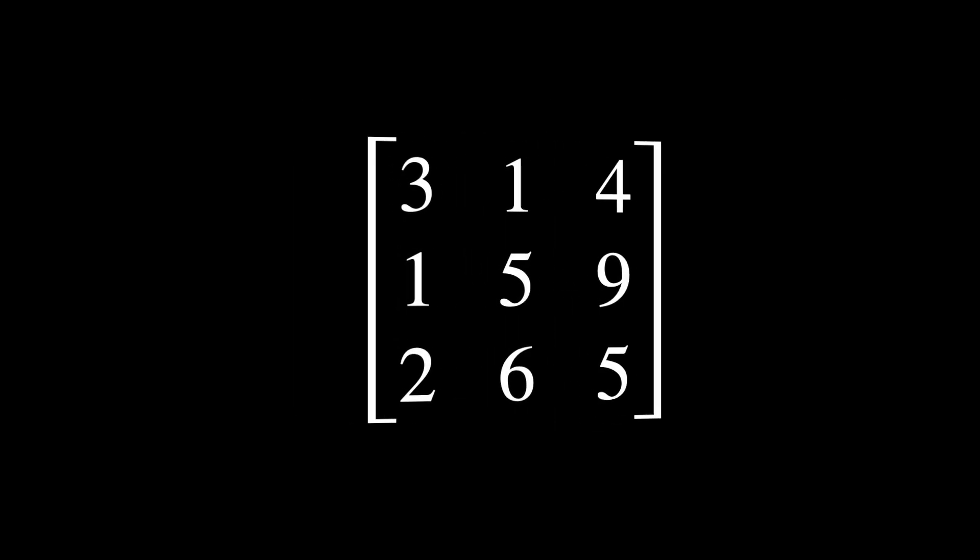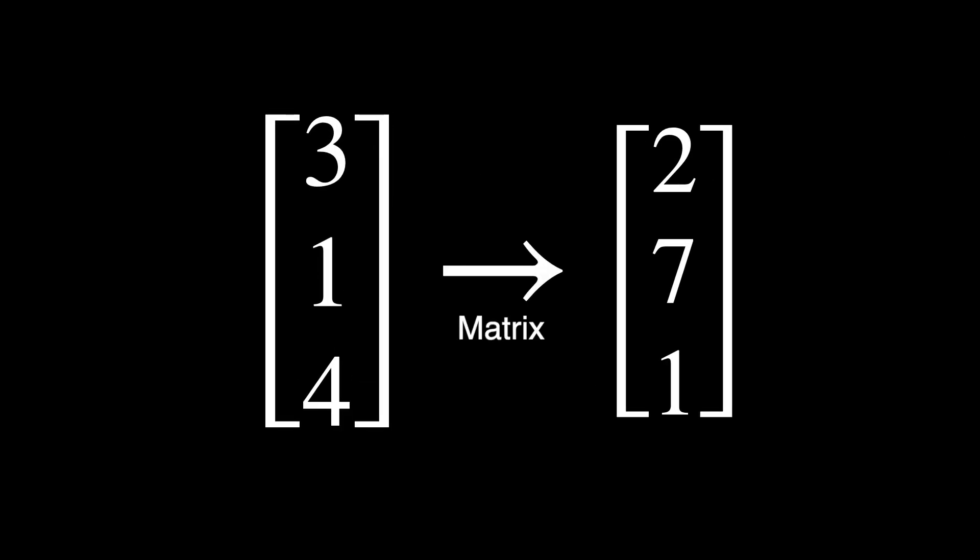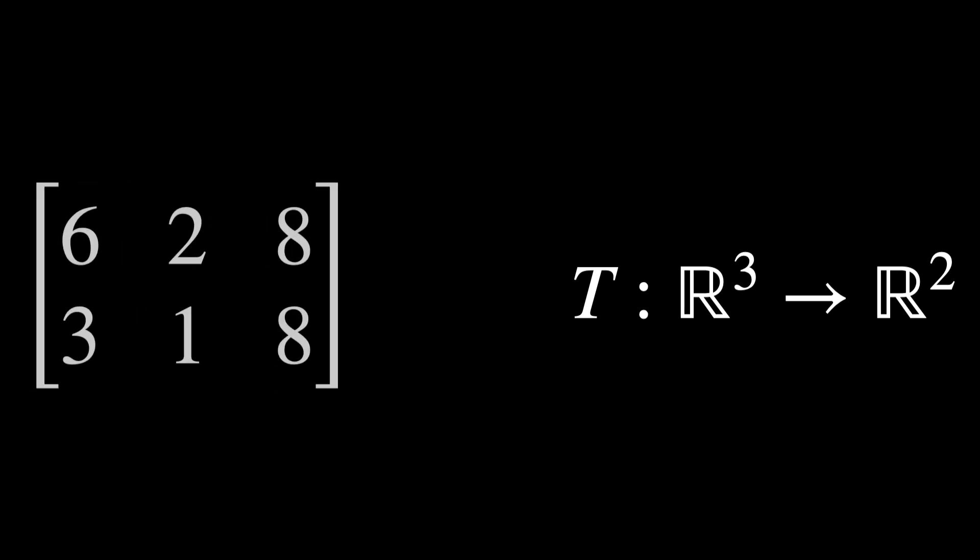Matrices are used to transform these vectors into different vectors with different lengths and directions. You could think of it as a pathway for a vector to become another vector, kind of like a mapping. We can also realize, from this definition, a matrix is just a linear transformation mapping something to another thing, just like a function.